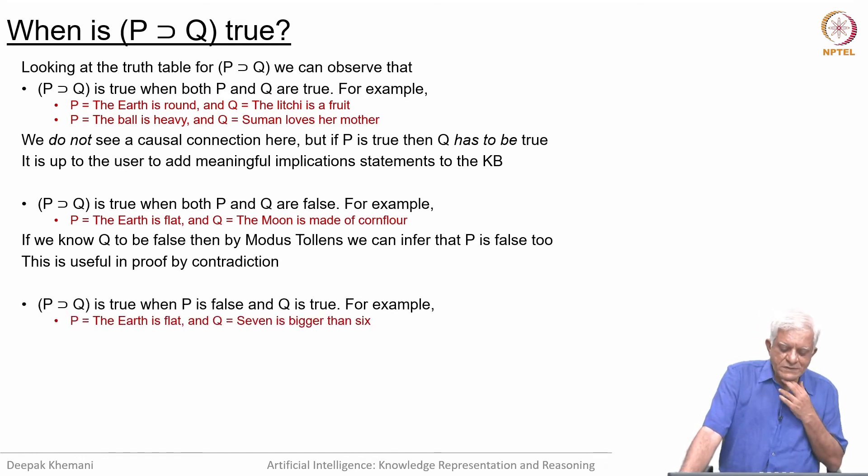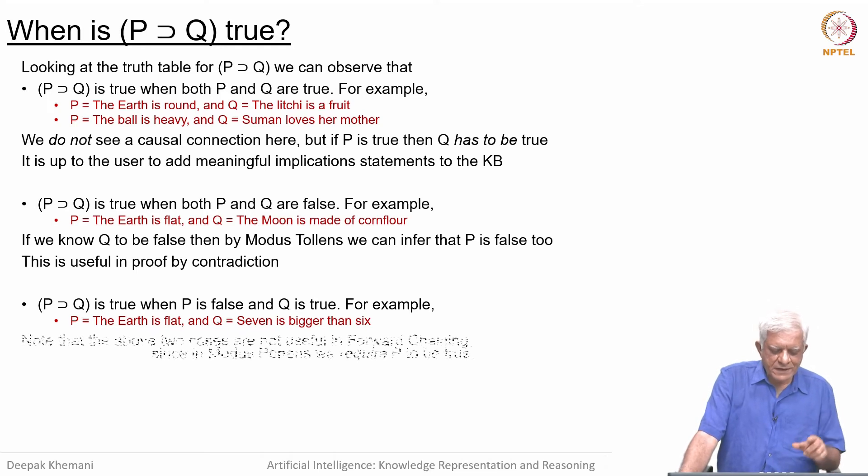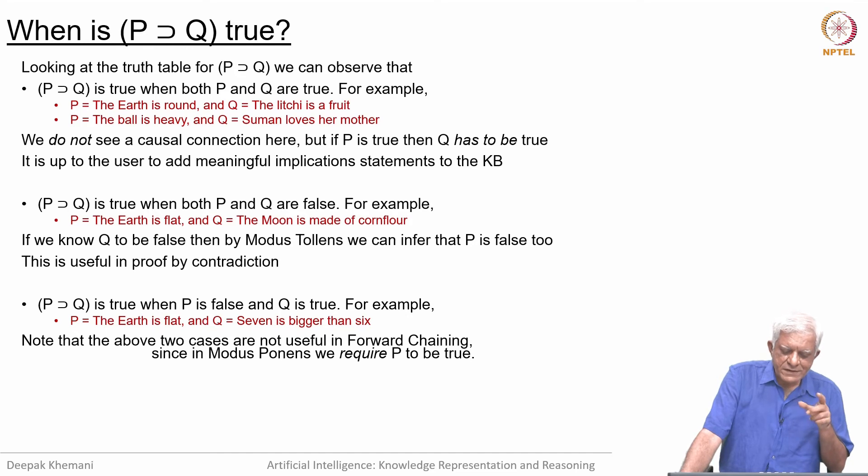Another case when P implies Q is true is when P is false and Q is true. For example, the earth is flat and 7 is bigger than 6. But when P is false and Q can be false or true, these cases cannot be used in Modus Tollens, because Modus Tollens requires that P be true. But as we saw, one of them can be used in Modus Tollens.